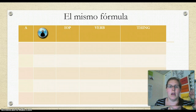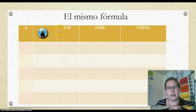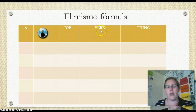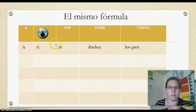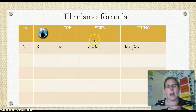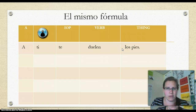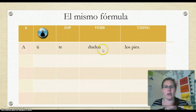We're going to use the same formula: 'a' plus a person, then our indirect object pronoun — me, te, le, nos, les — then a verb, then the thing. For example: your feet hurt. We say 'te duelen los pies.' Remember, your feet are what's doing the verbing, so we conjugate the verb for your feet. That's why it's duelen, not dueles. You're not hurting yourself — your feet are hurting you.